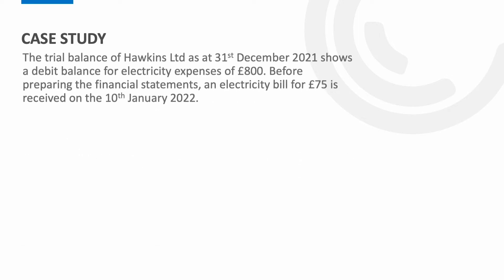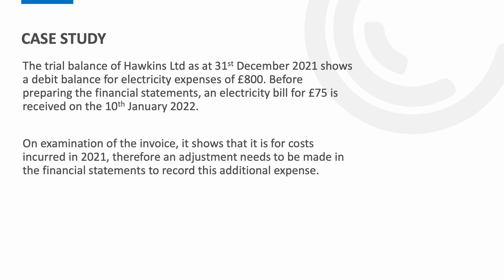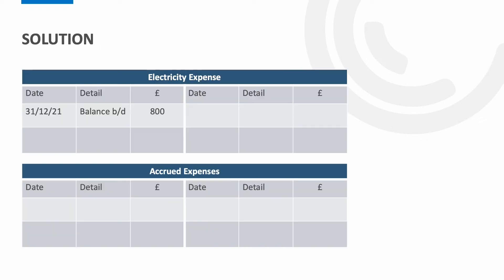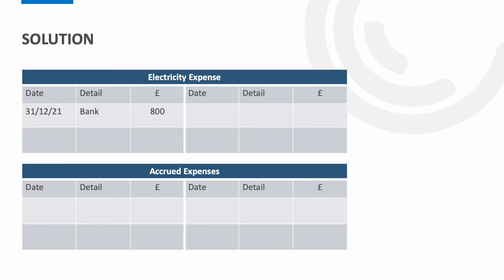The double entry to record an accrued expense is to debit the relevant expense account, increasing the balance, and credit the accrued expense account to increase the business's liabilities. In case study one, the trial balance of Hawkins Limited as at 31st December 2021 shows a debit balance for electricity expenses of £800. Before preparing the financial statements, an electricity bill for £75 is received on the 10th of January 2022. On examination, the invoice shows costs incurred within 2021, so an adjustment needs to be made. We debit the electricity expense by £75 and credit the accrued expenses for £75.